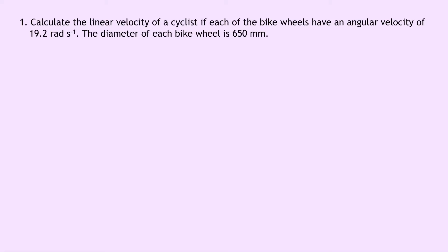Question one says, to calculate the linear velocity of a cyclist, each of the bike wheels have an angular velocity of 19.2 radians per second. The diameter of each bike wheel is 650 millimeters. So writing down what we know from the question, we're trying to find the linear velocity V. We know that the angular velocity omega is equal to 19.2 radians per second.